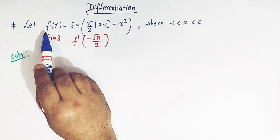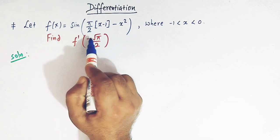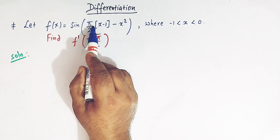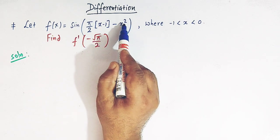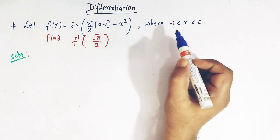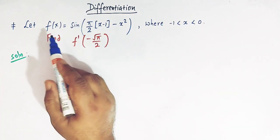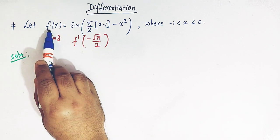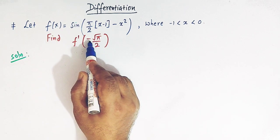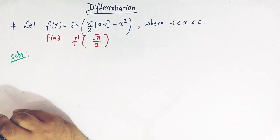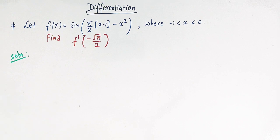If we have a function f of x equal to sin of pi by 2 times greatest integer of x minus 1, minus x squared, where x lies between minus 1 and 0, then we have to find the derivative of this function at x equal to minus root pi over 2.